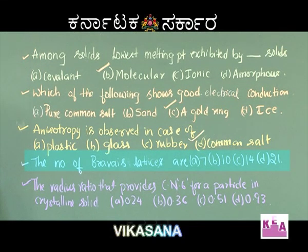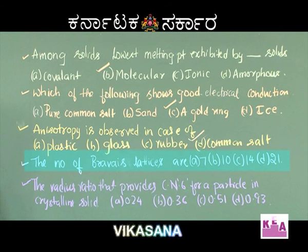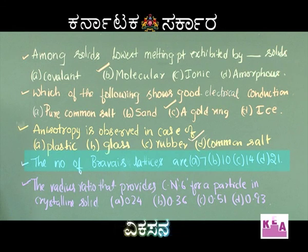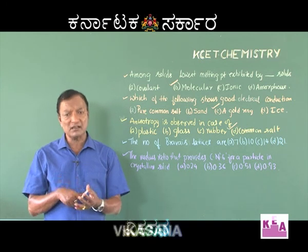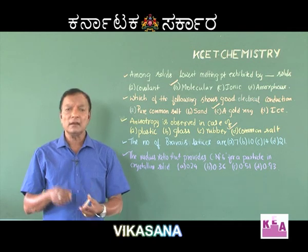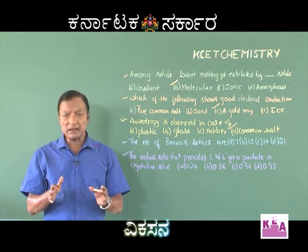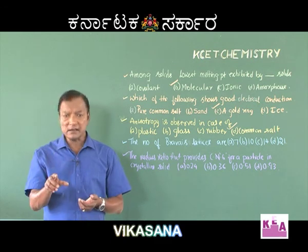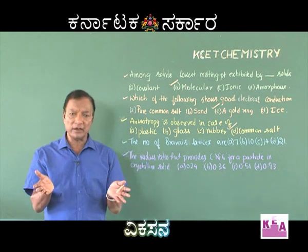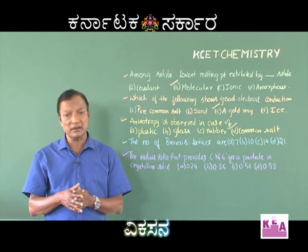The next question is the number of Bravais lattices. We go for the study of crystalline solids with the help of the crystal lattice and the unit cells. These are the basic requirements for the crystalline solids, where a lattice is a three-dimensional pattern of points showing how the particles are arranged in the crystalline solid.